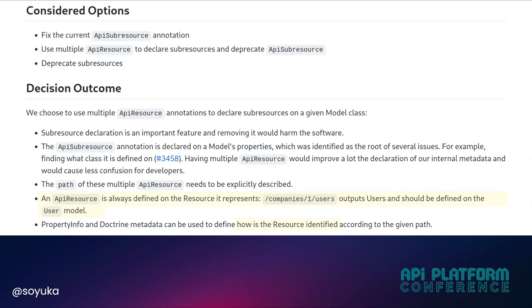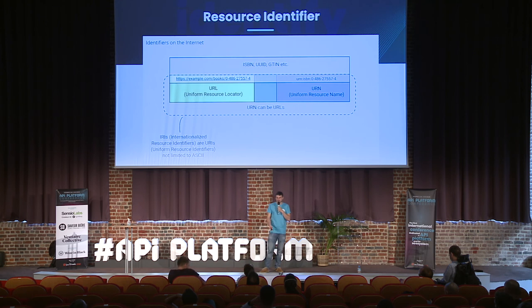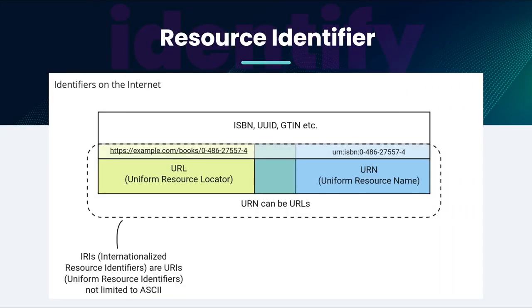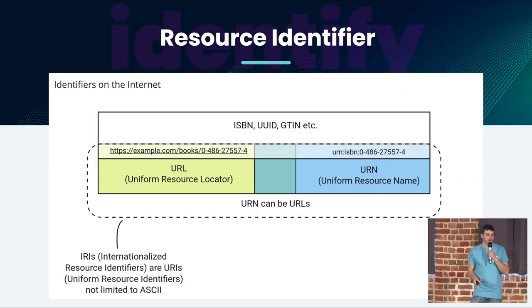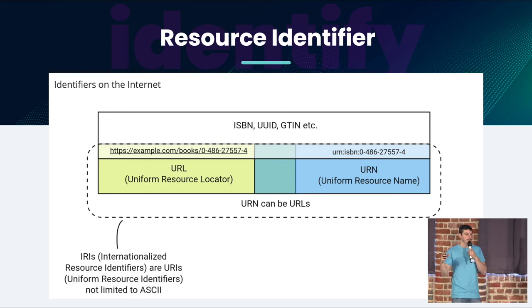We identified another issue: by doing so, we need to identify the resource, or be able to say this resource is identified like this. About identifiers — I will speak a lot about IRIs or URIs, which are in fact just URLs, as you can see in this schema. For example, example.com/books/isbn is an IRI.